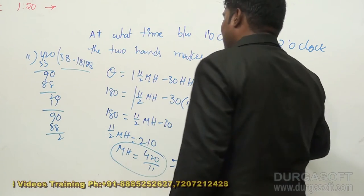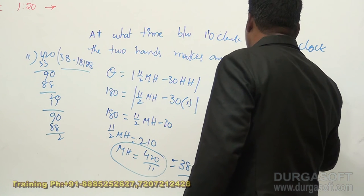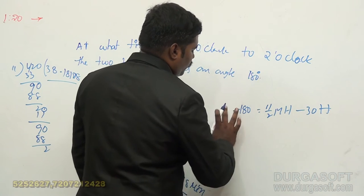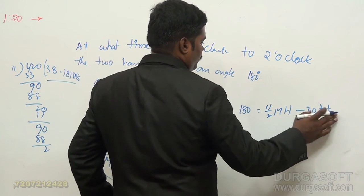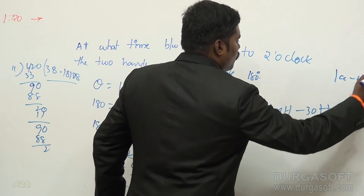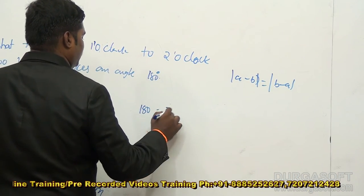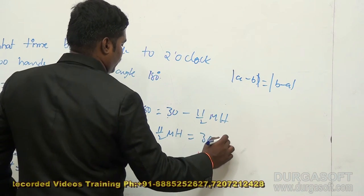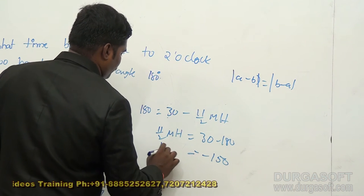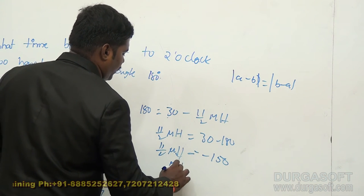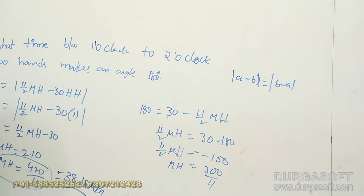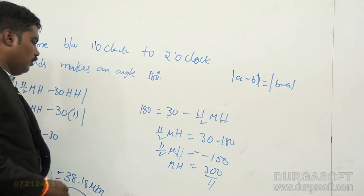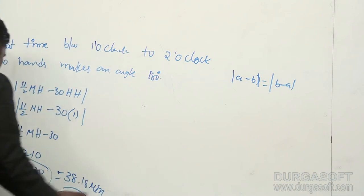This 38.18 is the minutes, not the angle. It may also be taken as negative — minus 180 = 11/2 × M minus 30 × H — giving 11/2 × M = 30 minus 180 = minus 150, so M = 300/11. However, this gives the anti-clockwise resolution. Please use the positive conditions only to get the correct answer.